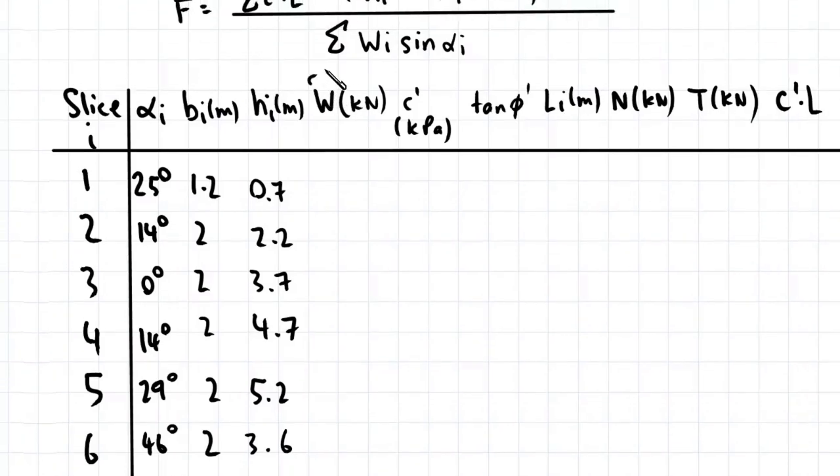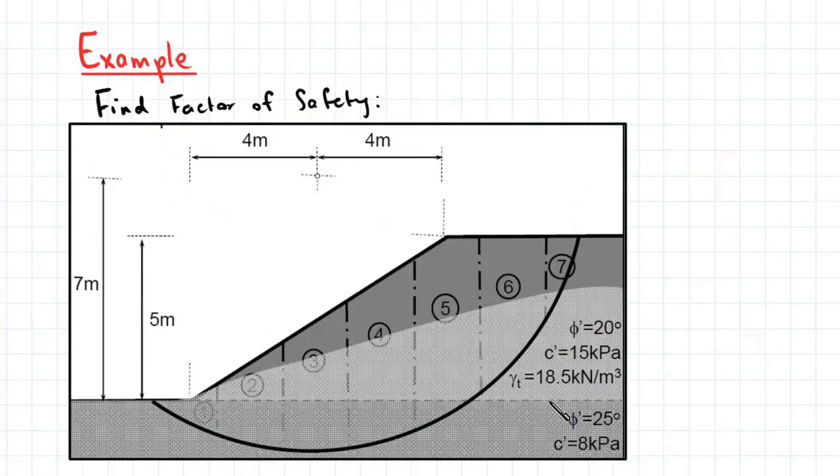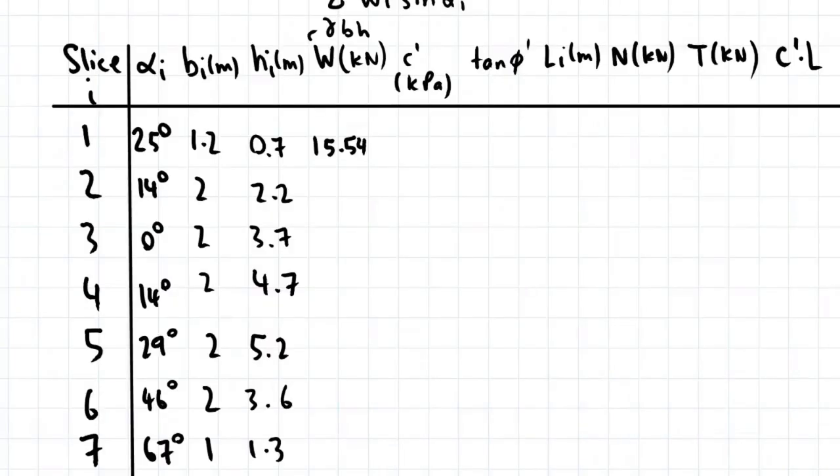So W here, that's gamma multiplied by the dimensions of a slice BH. So this works out to be 15.54 kilonewtons. So we'll call that gamma t is 18.5 which is what we've used. 81.4, 136.9, 173.9, 192.4, 133.2, 24.1. And because there are a lot of calculations involved in this table, it may be easier for you to set up this table in Excel just to minimize the computational errors.